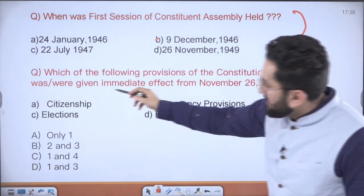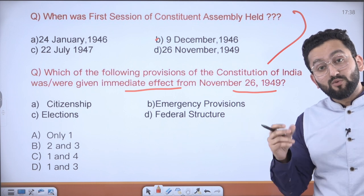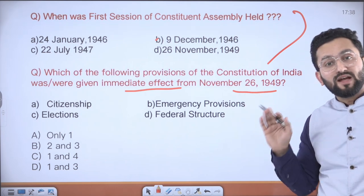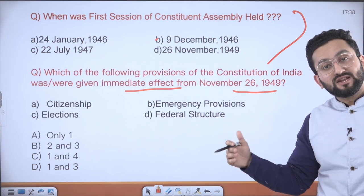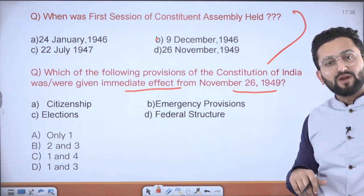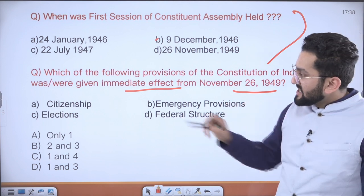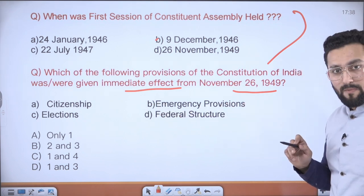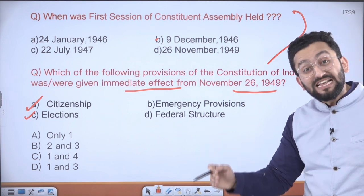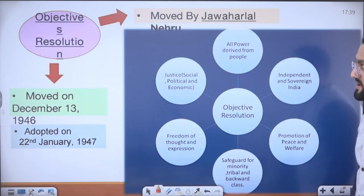Which provisions of the Indian Constitution had immediate effect on 26 November 1949? As the constitution got finalized, certain provisions were applied on this date. The full-fledged constitution got enacted on 26 January 1950 — we chose this date because of the Poorna Swaraj resolution, which was raised on 26 January. The answer involves citizenship provisions, election-related provisions, and other provisions associated with the provisional parliament.